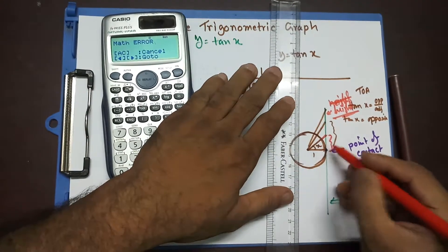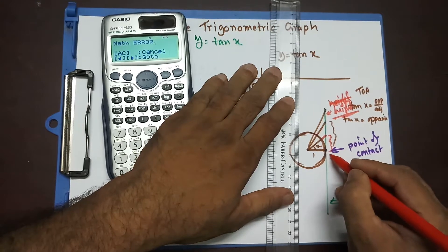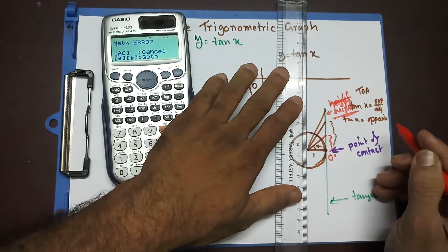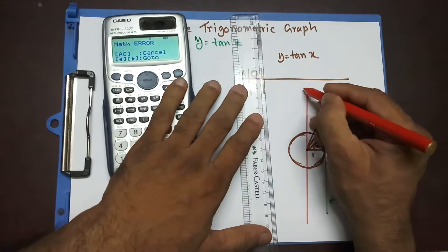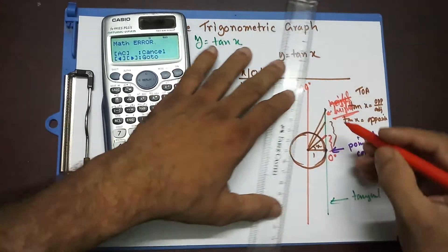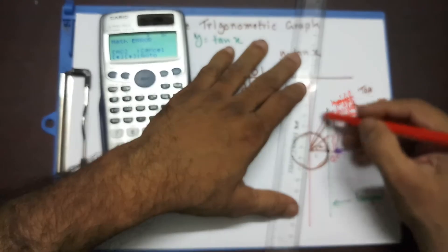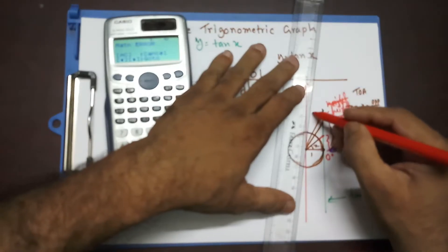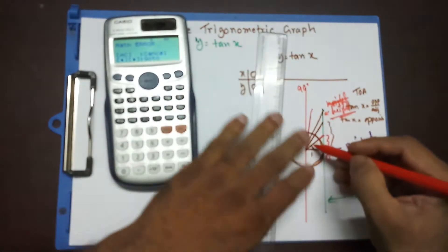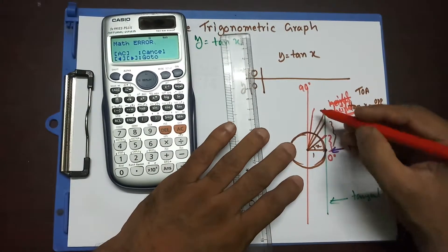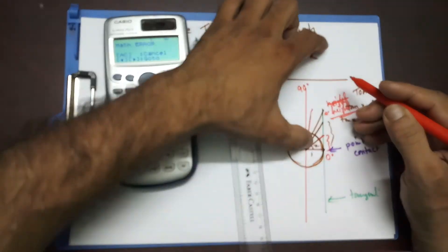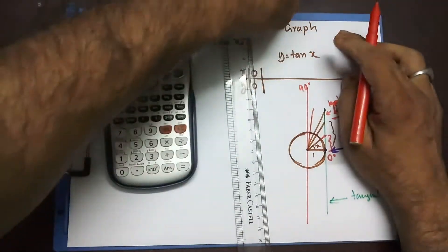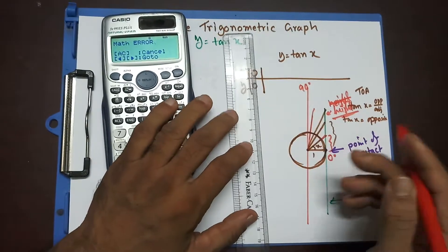But, at this one, point of contact over here is 0 degree. But, this line over here, it's my 90 degree angle. Now, if I have a value, if I have a value of tangent, an angle is very close to 90 degree. I can see that if I increase this line, the length of the line, if I increase it, it's somewhere up there, meet this tangent line. So, I'm going to have some value.